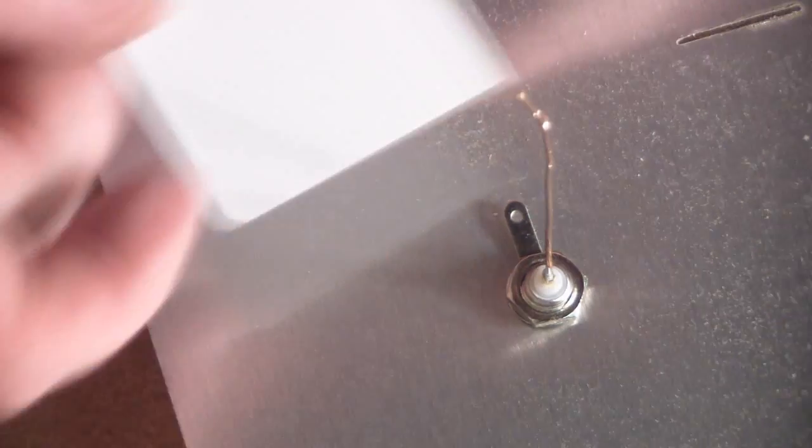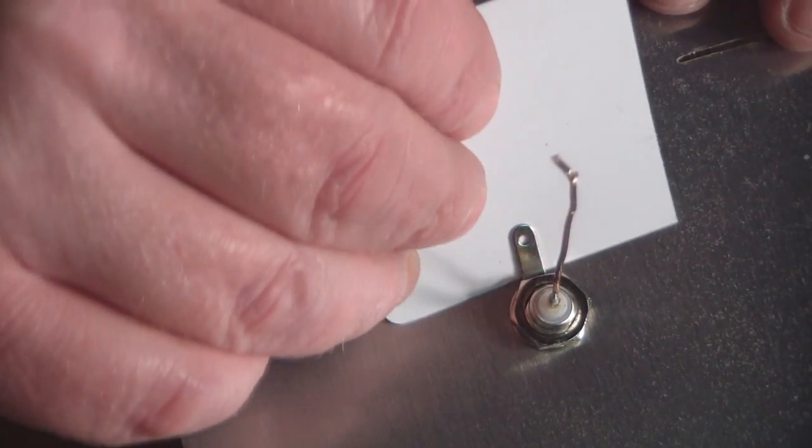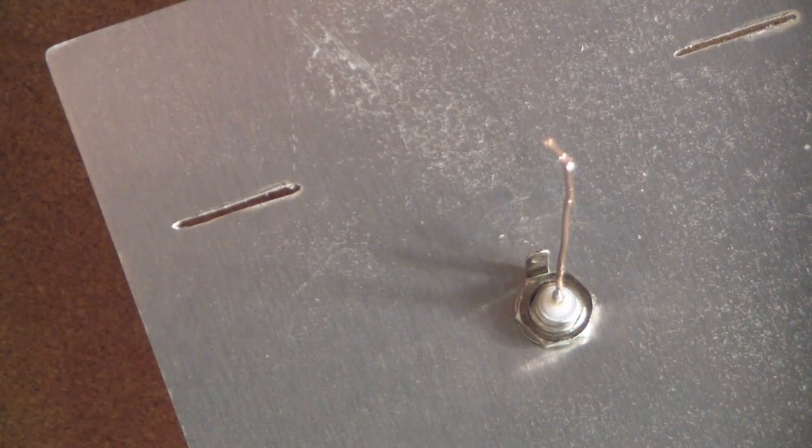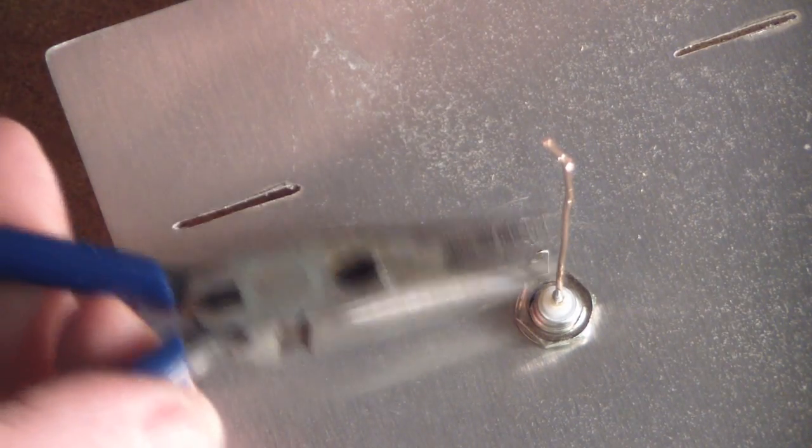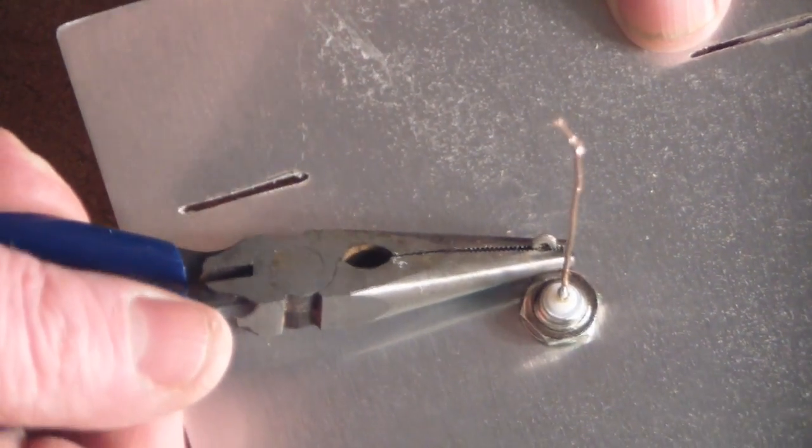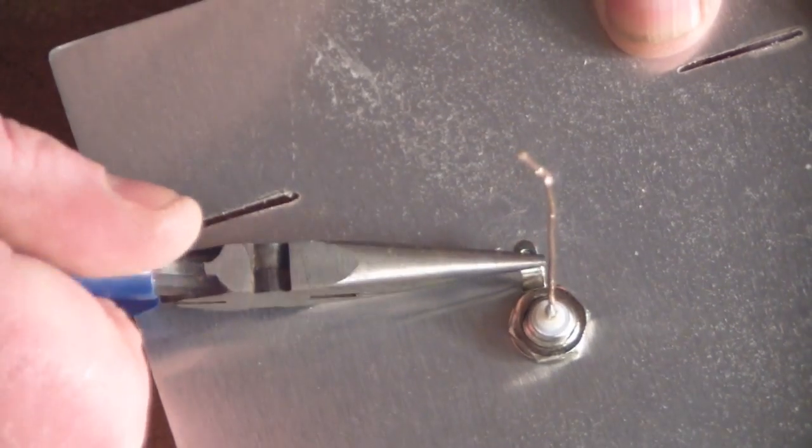You want to bend it up slightly at a 90 degree angle and get your needle nose pliers and just get the end of it where the hole is and bend that back on itself like so.